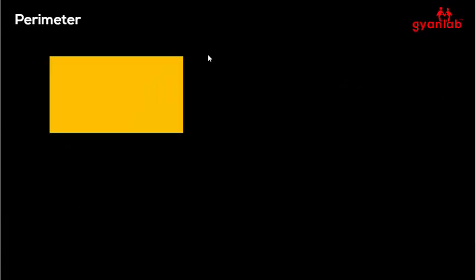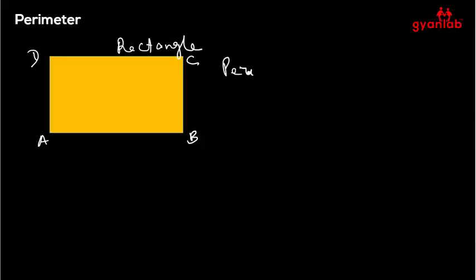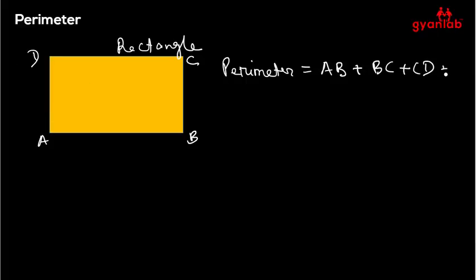Let's move on. We have a rectangle here and we're going to find its perimeter. I'll name the corners of the rectangle A, B, C, and D. The perimeter of this rectangle would be: length AB plus length BC plus length CD plus length DA — going all around and coming back to A, forming a closed figure. Adding these values gives the perimeter of the rectangle.